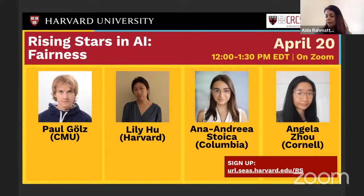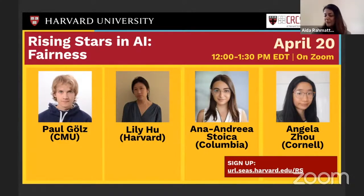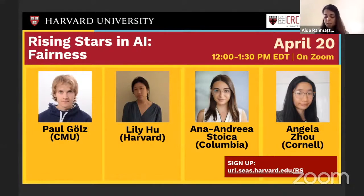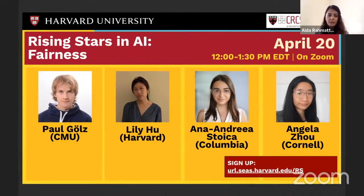Our first talk is by Paul Gölz. Paul will talk about his work on fair algorithms for selecting citizens' assemblies. Paul is a PhD student in the Computer Science Department at CMU, advised by Ariel Procaccia. Paul's research applies tools from AI, algorithms, and game theory to help society make better decisions. A specific interest of his is emerging forms of democratic participation and how these processes can be supported by axiomatic and algorithmic analysis.